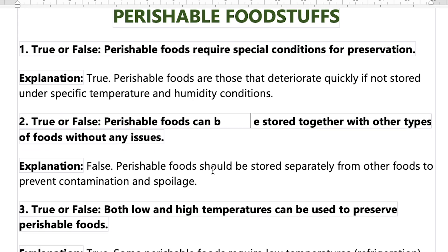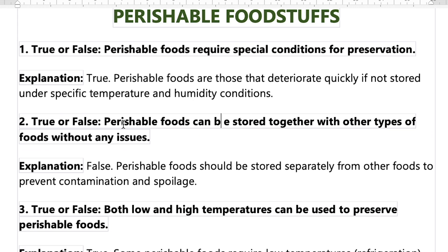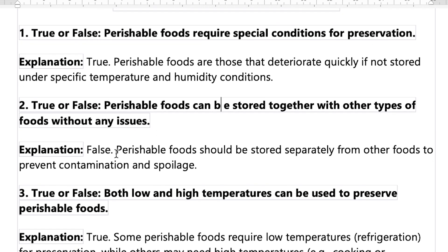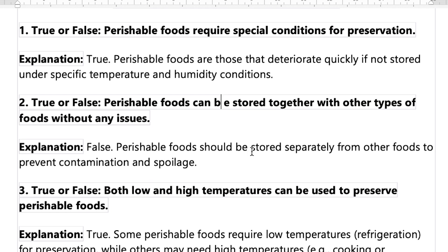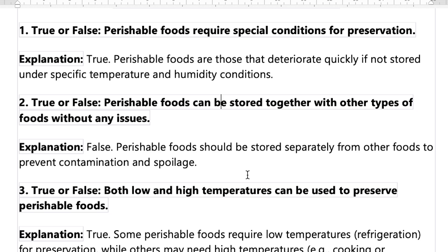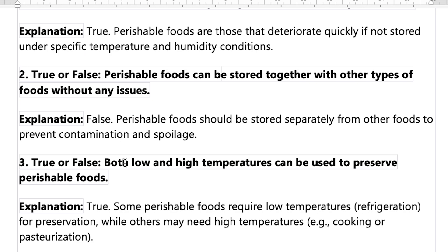Number two: perishable food can be stored together with other types of food without any issue. That's false, of course, because you should store — for example — meat differently from vegetables. You cannot mix them together. Even when cutting meat, you should not use that same knife to cut vegetables — that is not hygienic.